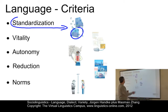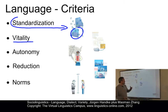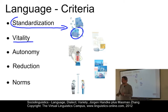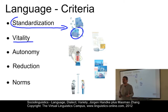A second criterion for defining a language is vitality. This refers to the existence of a living community of speakers, distinguishing languages which are alive from languages which are dead. For example, Manx — a Celtic language formerly spoken on the Isle of Man in the Irish Sea — as compared with Welsh, a living language spoken in Wales. Both are Celtic languages.